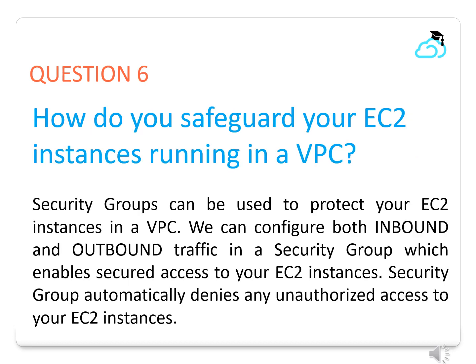Question 6. How do you safeguard your EC2 instances running in a VPC? Security groups can be used to protect your EC2 instances in a VPC. We can configure both inbound and outbound traffic in a security group, which enables secured access to your EC2 instances. Security groups automatically deny any unauthorized access to your EC2 instances.